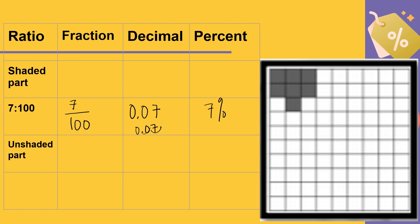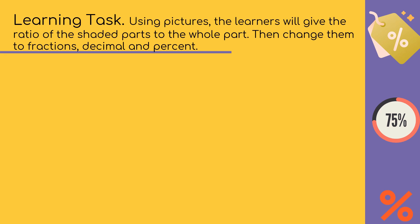How about the unshaded part? Since 7 is shaded, the unshaded is 93 is to 100. Then 93 over 100 as a fraction. The decimal is 0.93, and into percent it is 93 percent. It's that simple. From the learning task, we will use pictures and give the ratio of the shaded parts, then change them into fractions, decimal, and percent.